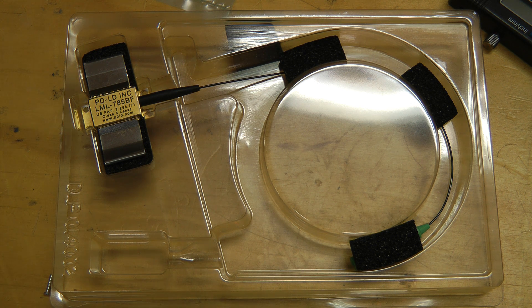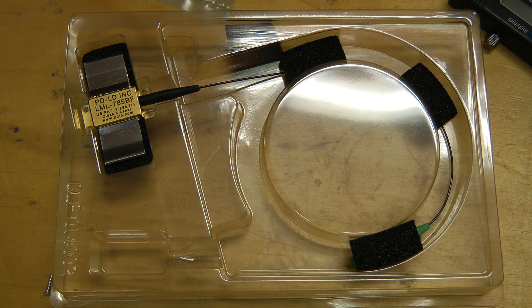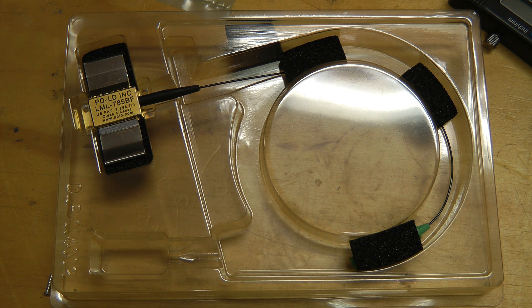This time we have a laser diode module. This is a 500 milliwatt module used in Raman spectroscopy applications. This one is special in that it has a very narrow band of light emission. I believe it's less than 0.1 nanometer width.